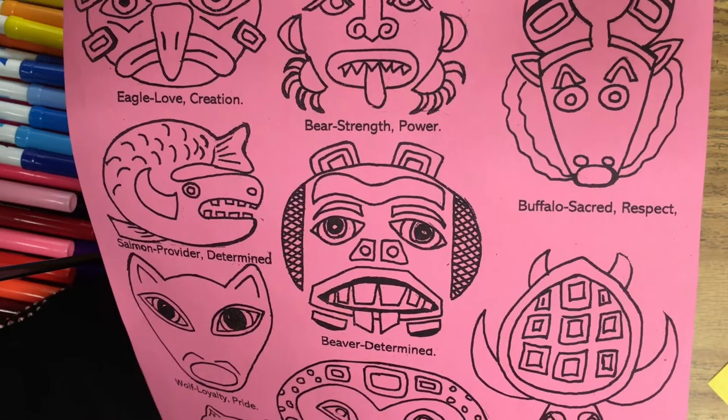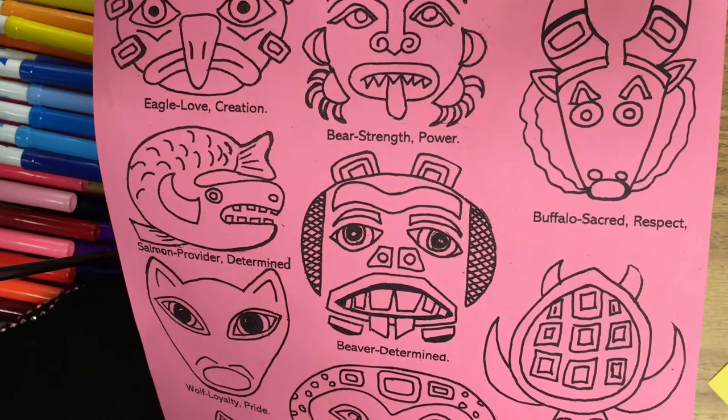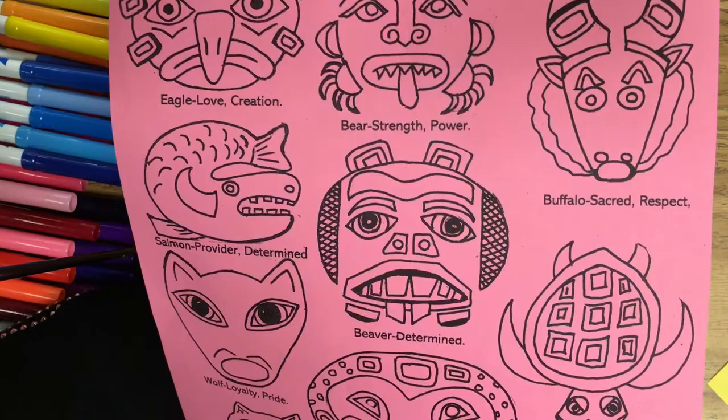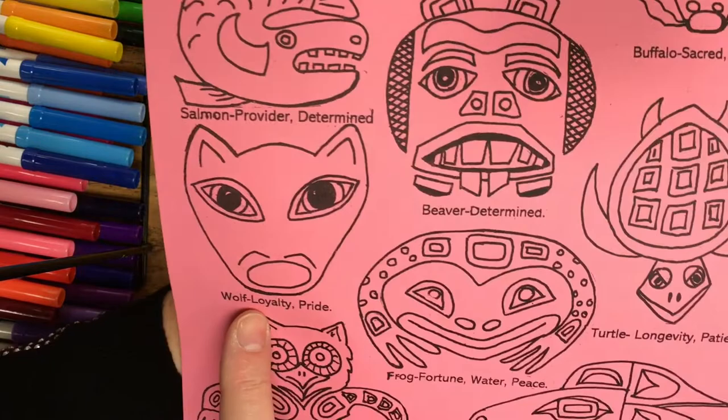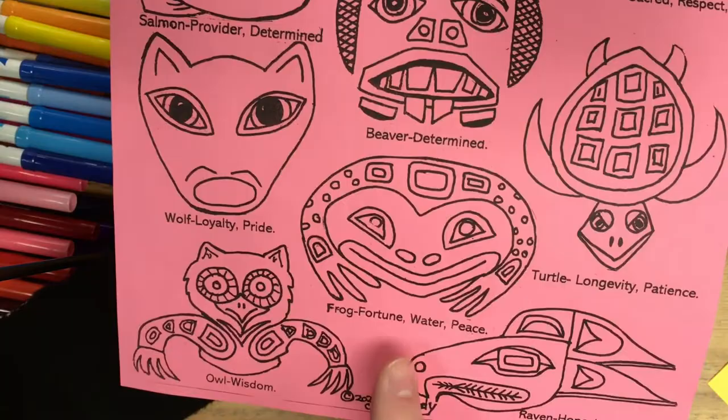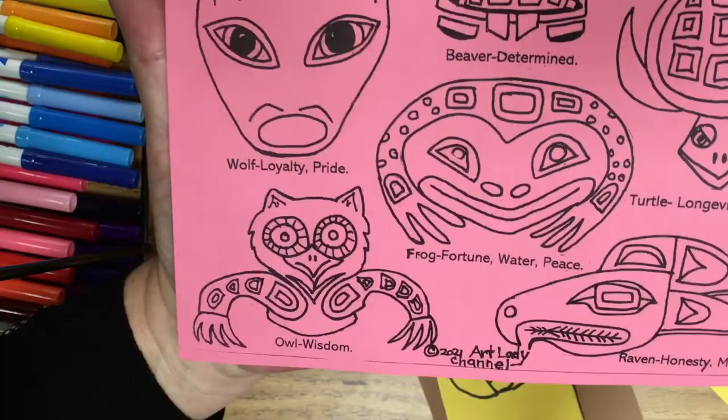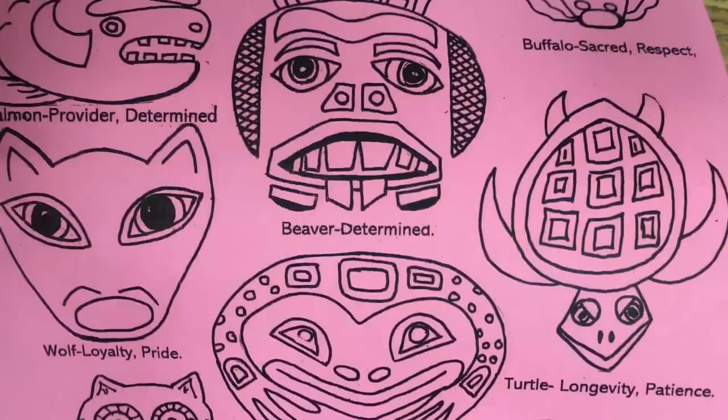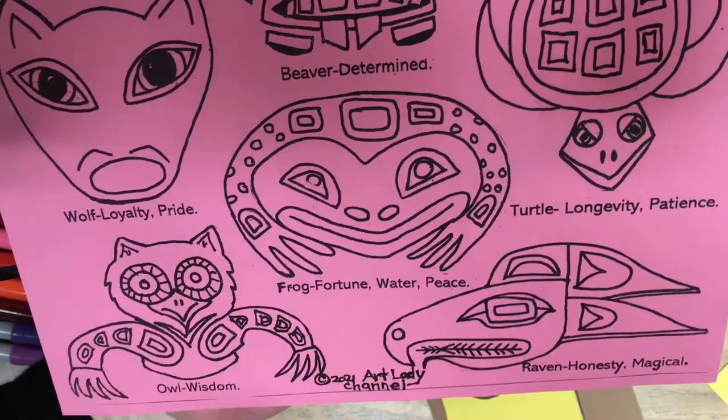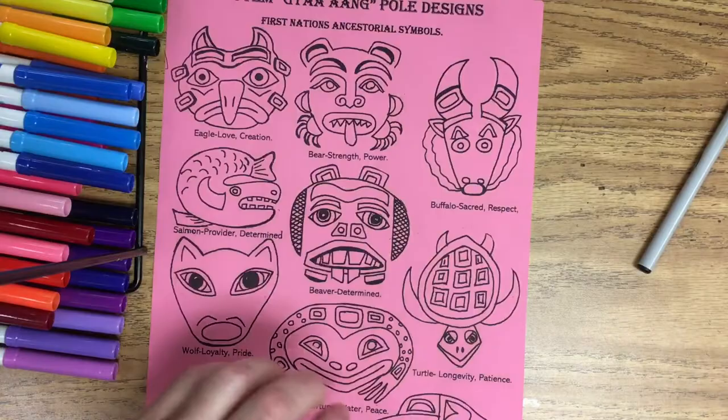And the beaver has a lot of determination as an animal with very powerful, strong front teeth that can actually cut down a tree with their teeth. And when I was a kid, we had a lot of our trees that were taken down by beavers. So then we have the wolf here, loyalty and pride. The frog is fortune, water, peace. Turtle is longevity. A lot of turtles live over a hundred years old. And the wisdom of the owl and the honesty and magical spirits of the raven.